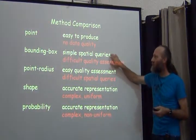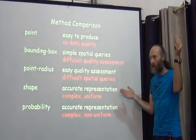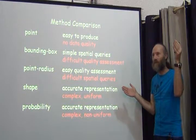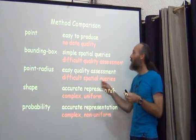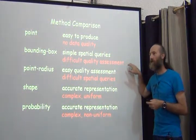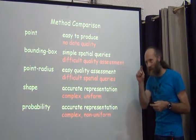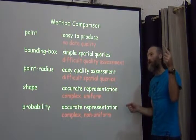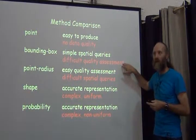The bounding box method is fairly simple for spatial queries — you only need to know if a value is greater than one corner and less than the other, except in strange cases around the international dateline where latitudes and longitudes flip from 180 to minus 180. But it's difficult to do quality assessment. You can't easily look at a bounding box and say how big it is — you have to examine each coordinate, and you can't determine specificity from just one number.